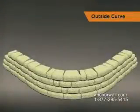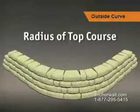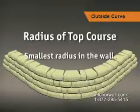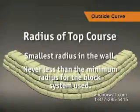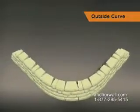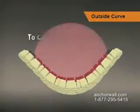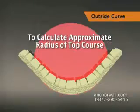When building an outside radius curve, begin by calculating the radius of the top course. This will be the smallest radius in the wall, and it must never be less than the minimum radius for the block system used. A rule of thumb used to calculate the approximate radius of the top course is this.